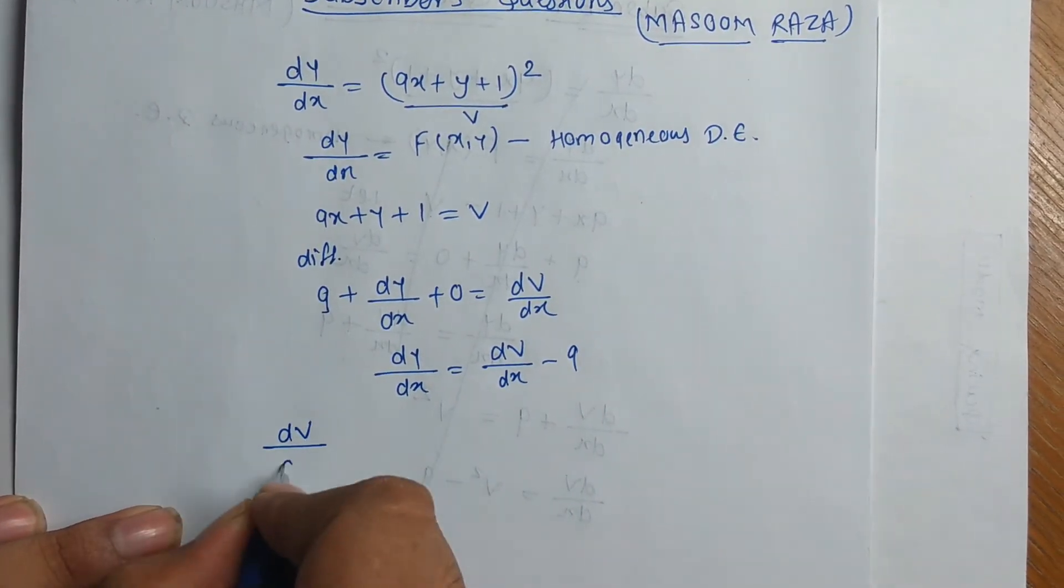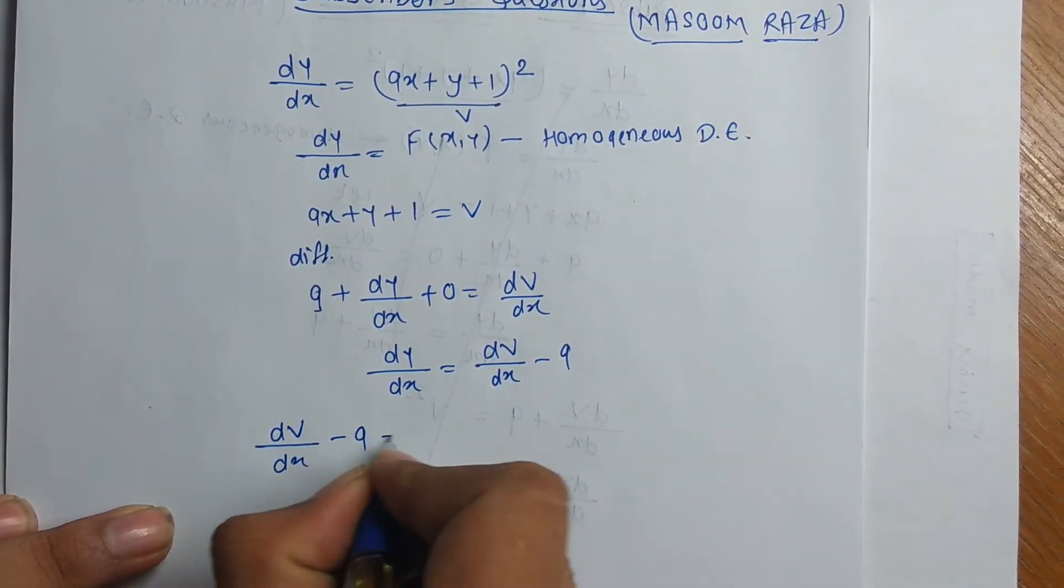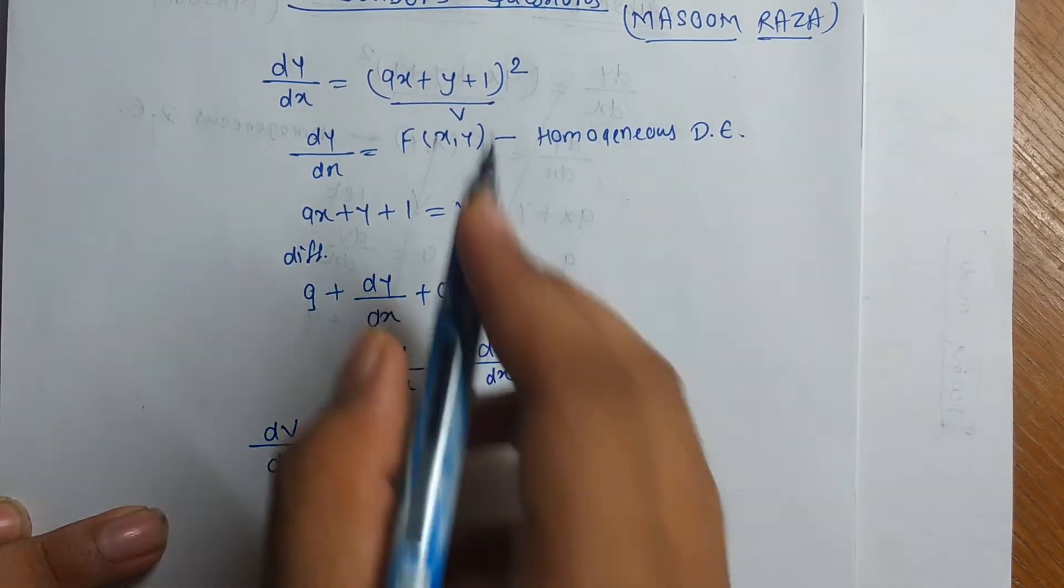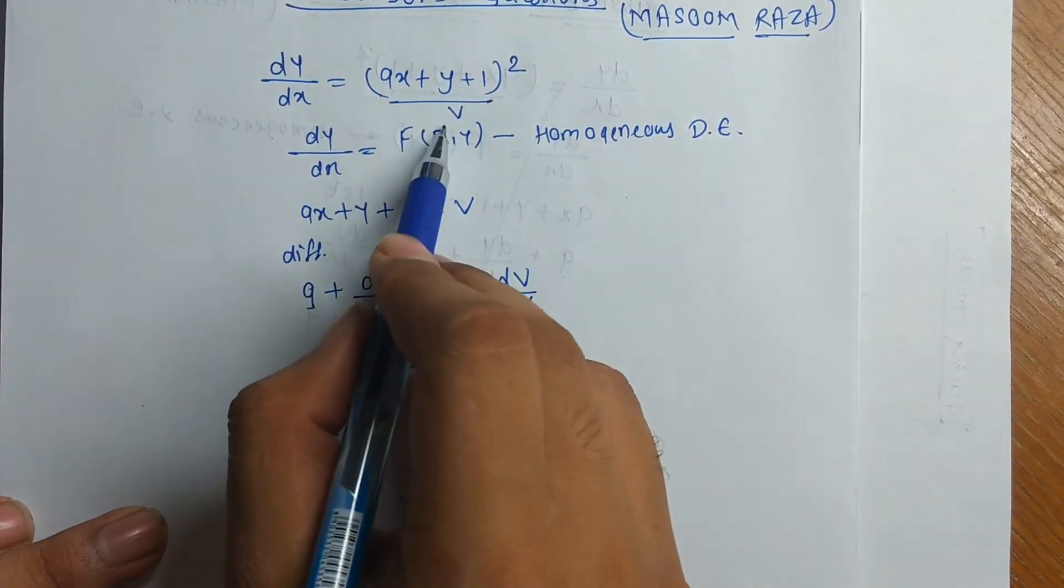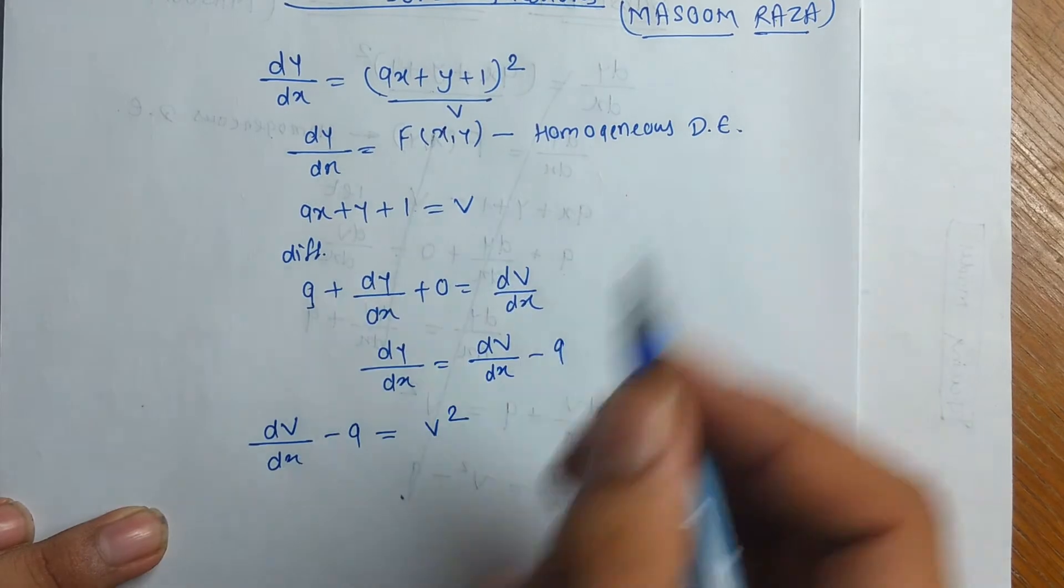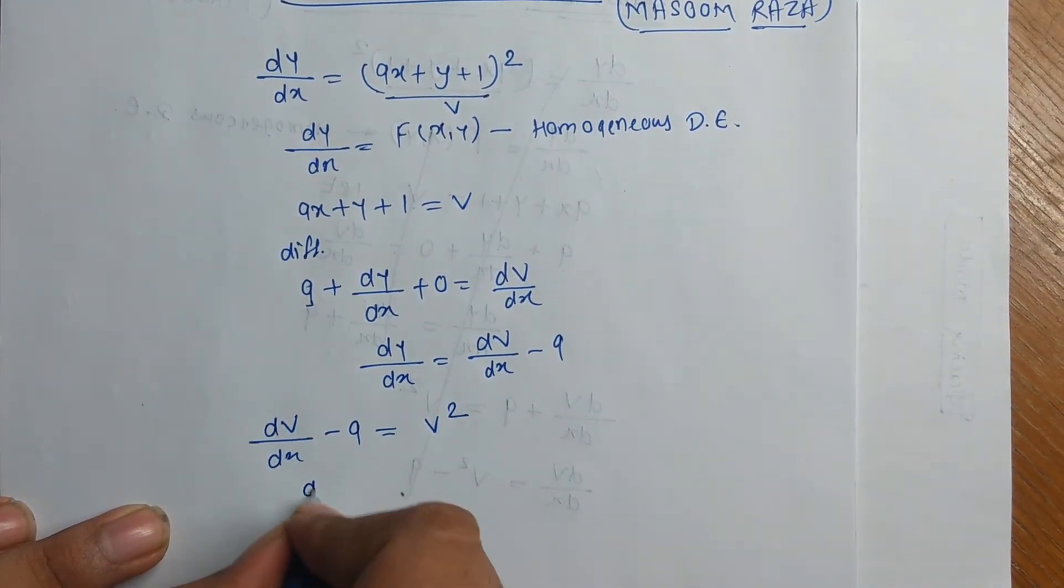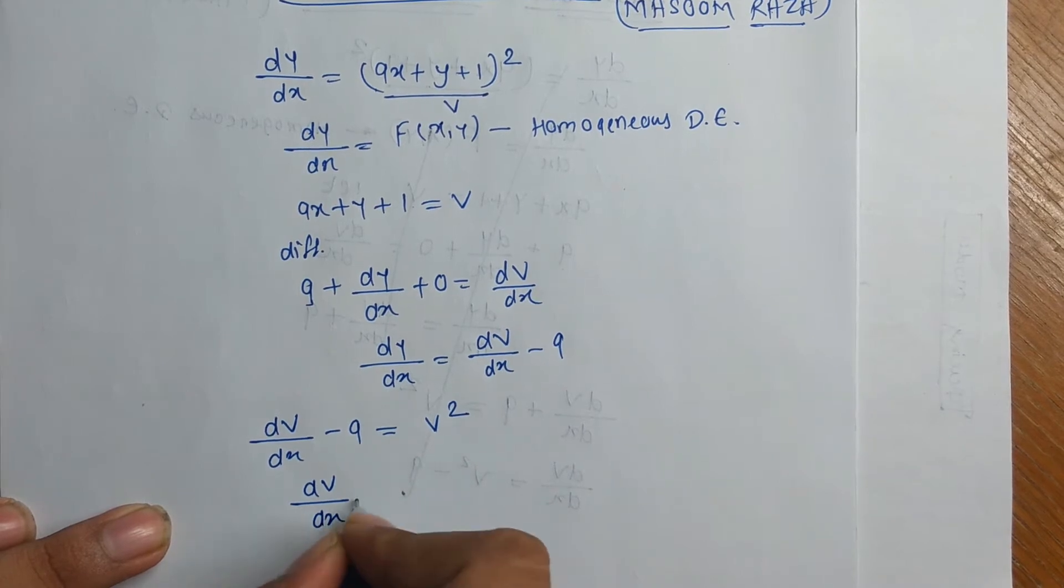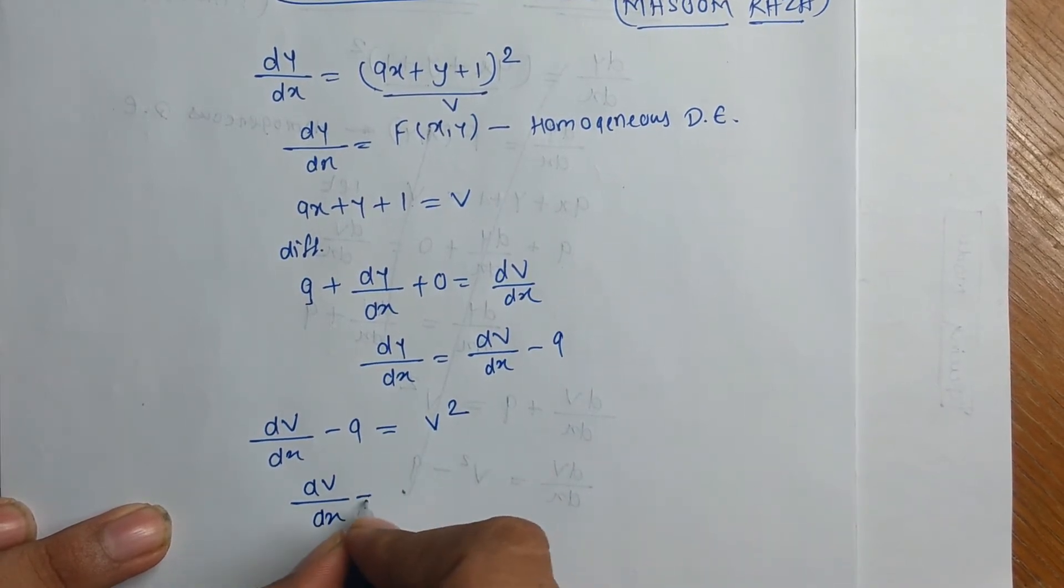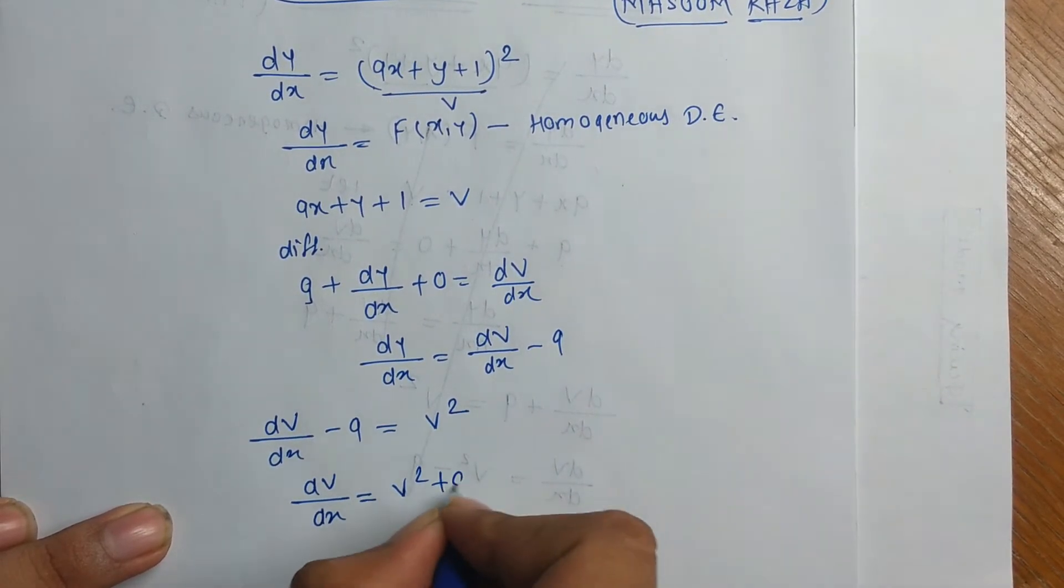We put dy by dx value here. That gives us dv by dx minus 9 equal to v square. Because in place of 9x plus y, we already assume that it is a v. That will be the v square. Now, we try to solve this equation. That is dv by dx equal to v square plus 9.